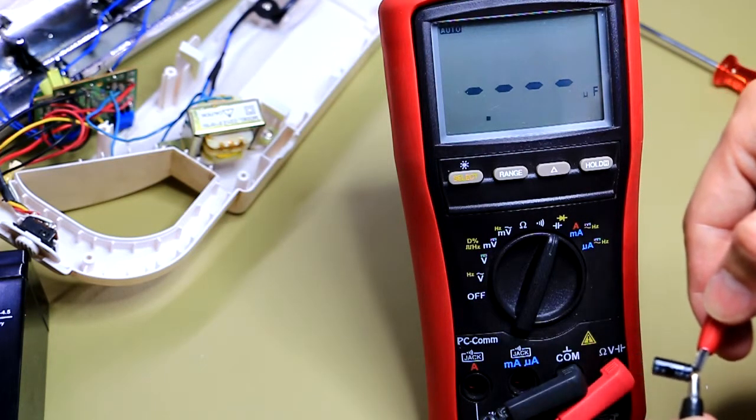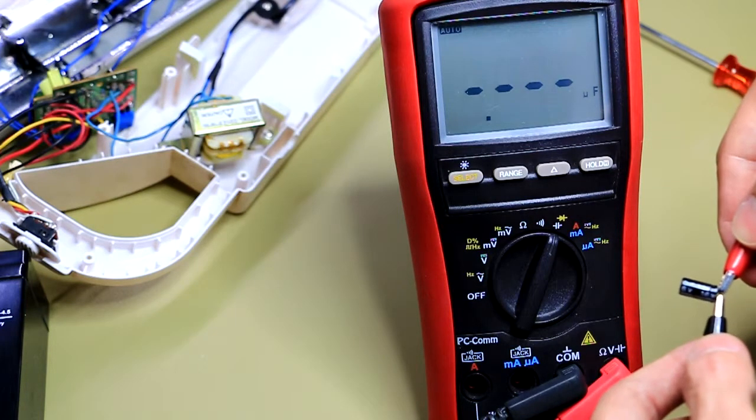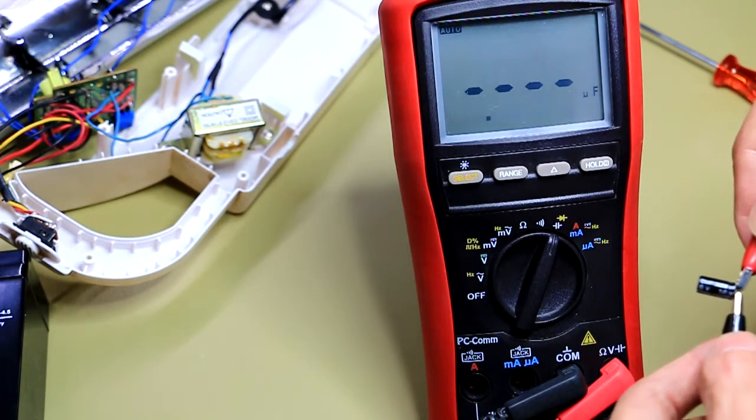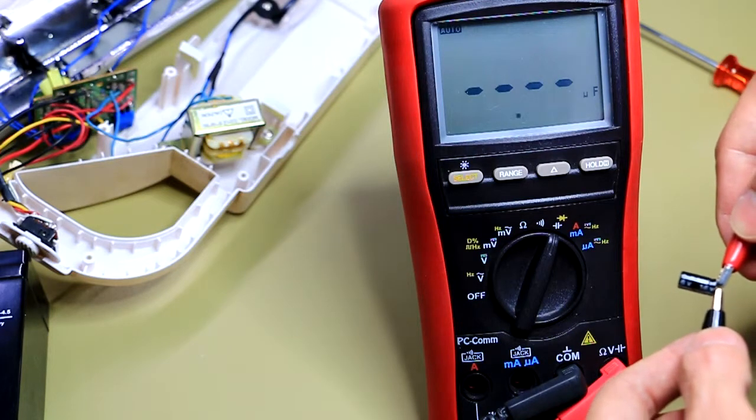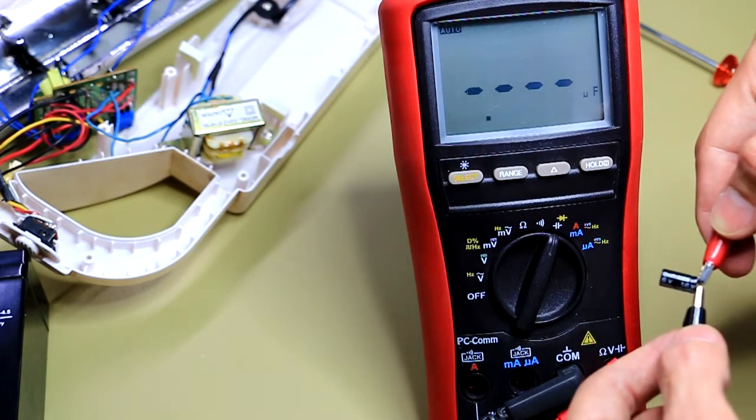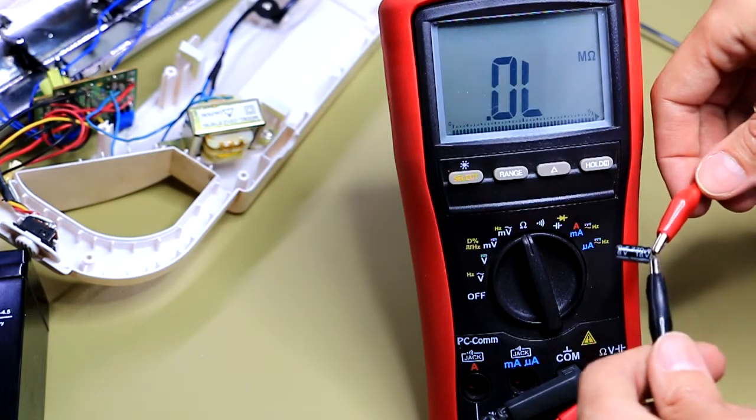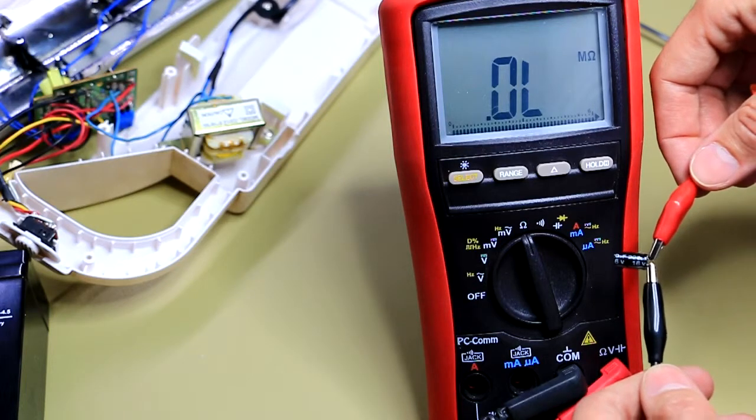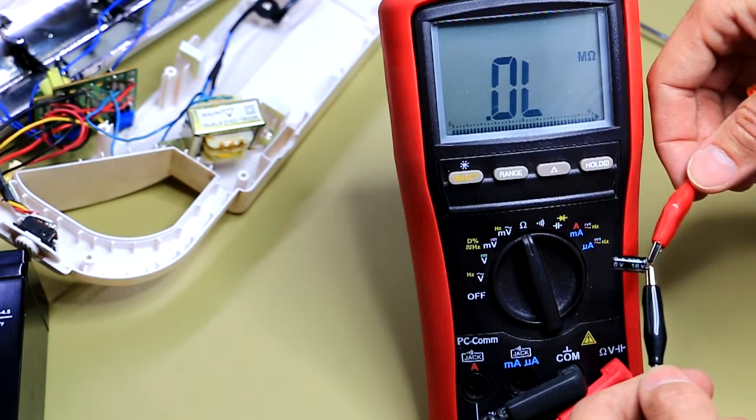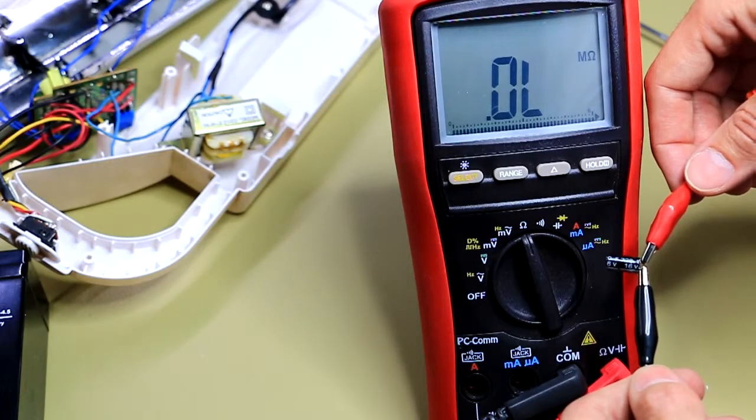This capacitor is definitely dead. So let's go to the parts bin and see if we can find something that's more or less similar. And just to make sure that it's not shorted out, let's quickly just measure the resistance. And as you can see, it's completely open circuit. It's completely dead, nothing there anymore.